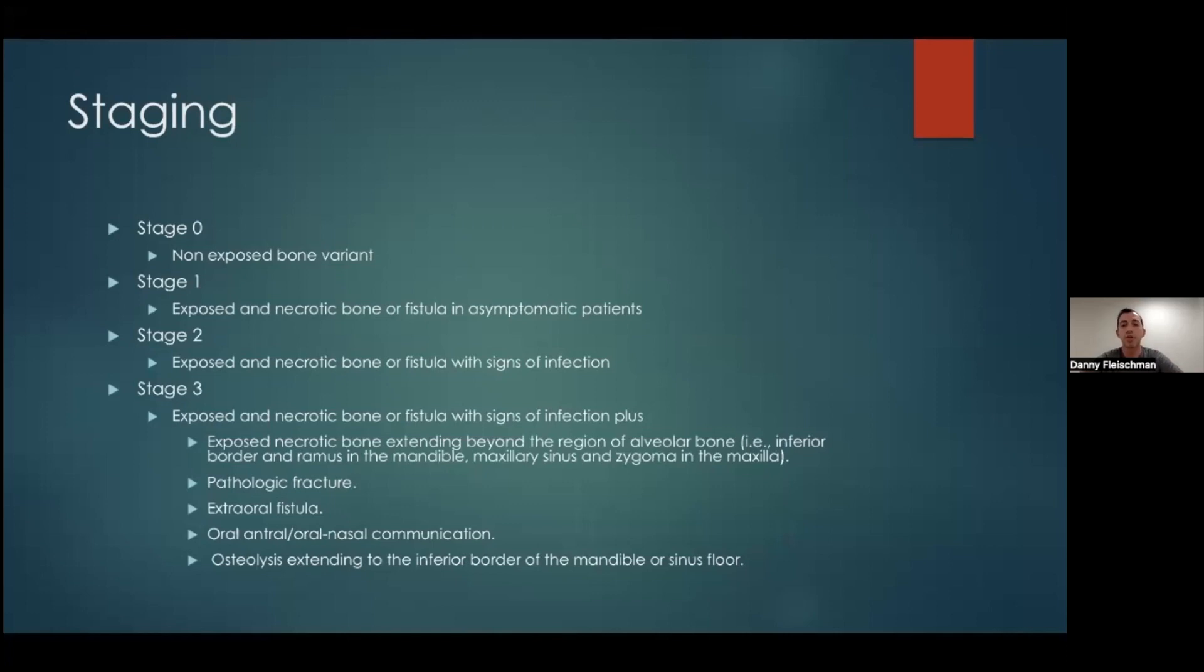Stage one is exposed and necrotic bone or a fistula in an asymptomatic patient. Stage two, they have exposed and necrotic bone or a fistula, but now there's a sign of infection. And stage three is exposed and necrotic bone or a fistula with sign of infection and pain. Plus, they could have exposed necrotic bone extending beyond the region of the alveolar bone up to the sinus. They can have pathologic fractures. They can have extraoral fistulas. They can have oronasal communications, and they can have osteolysis extending to the inferior border of the mandible or the sinus floor.